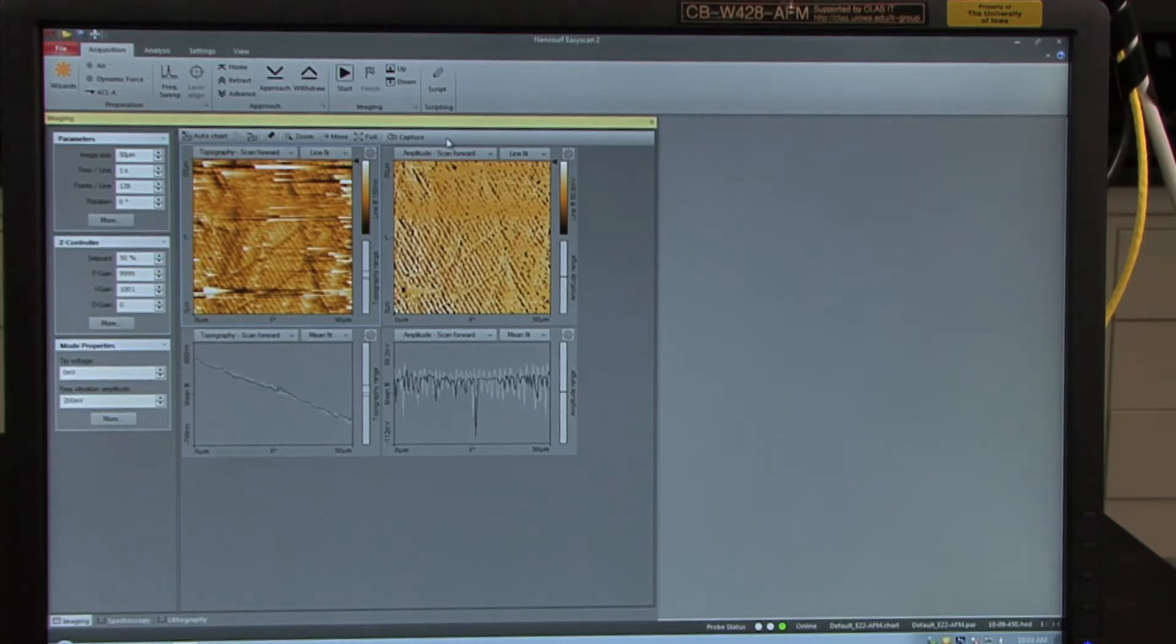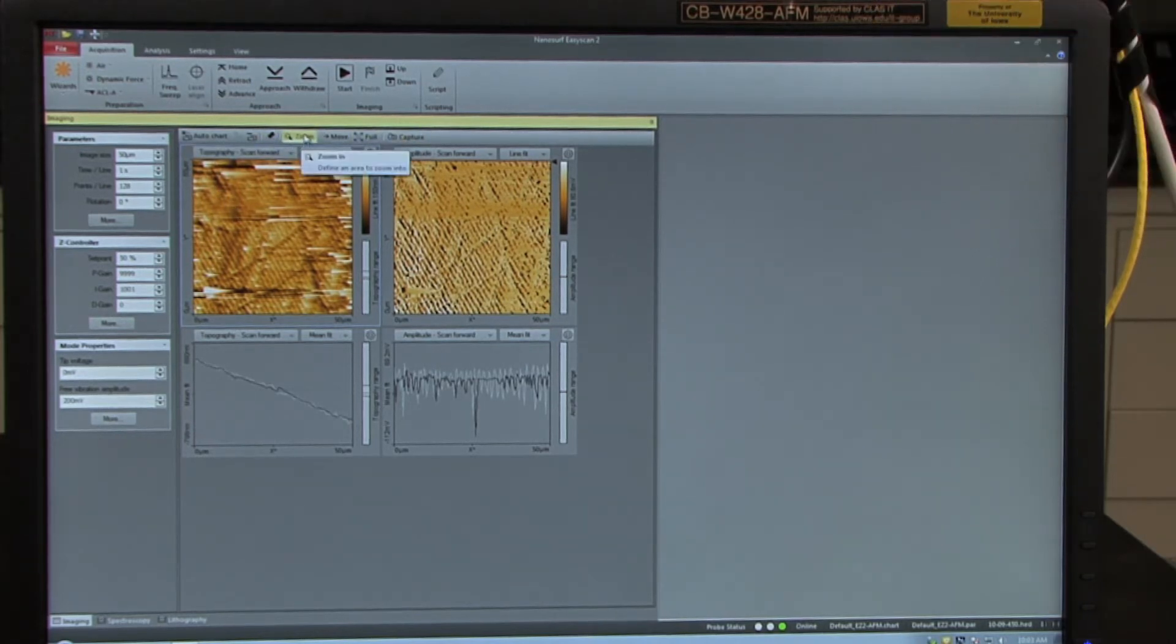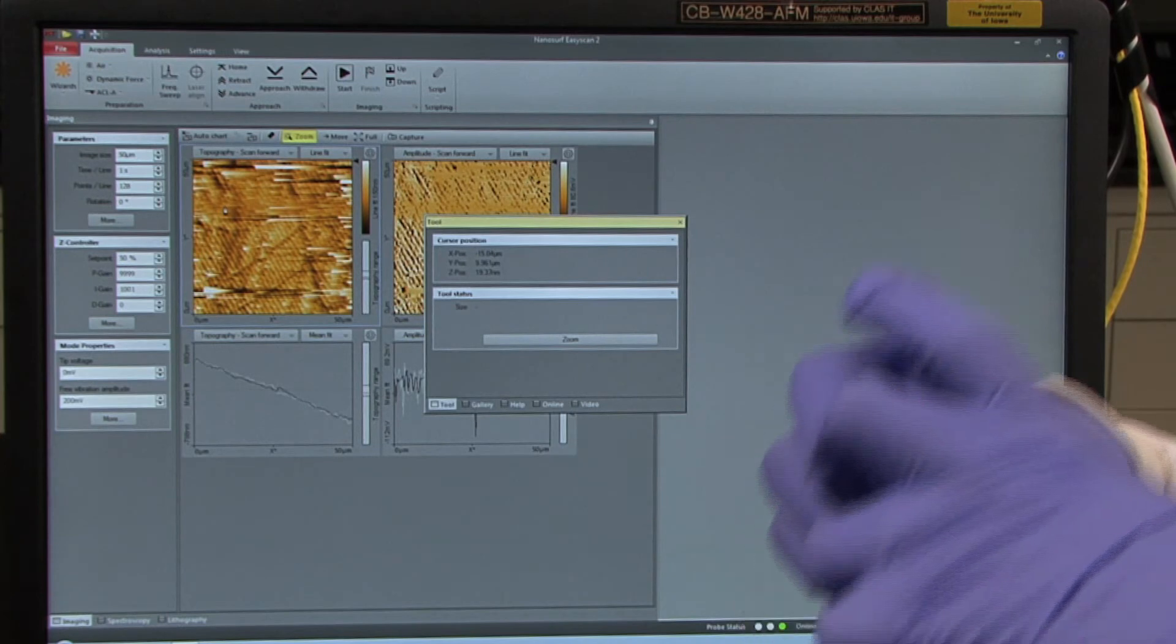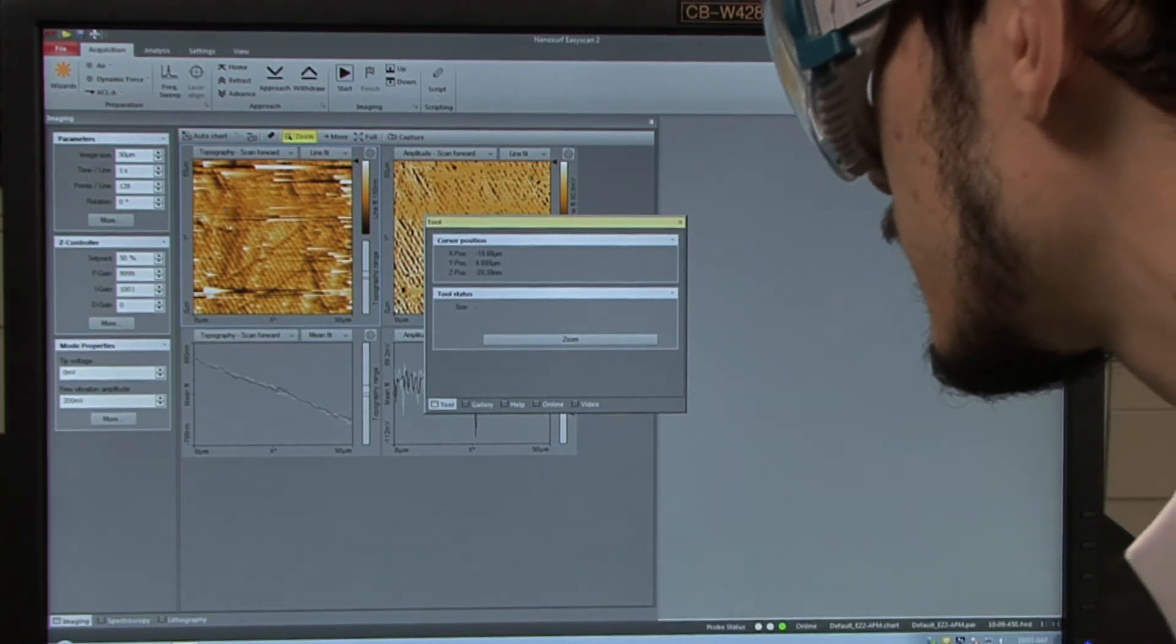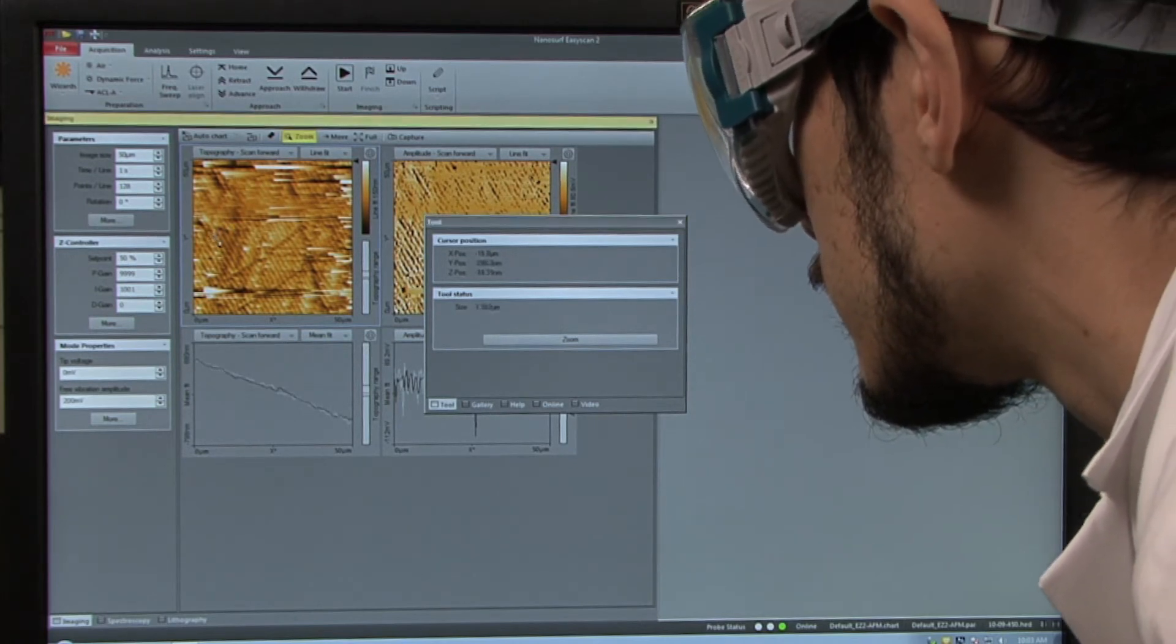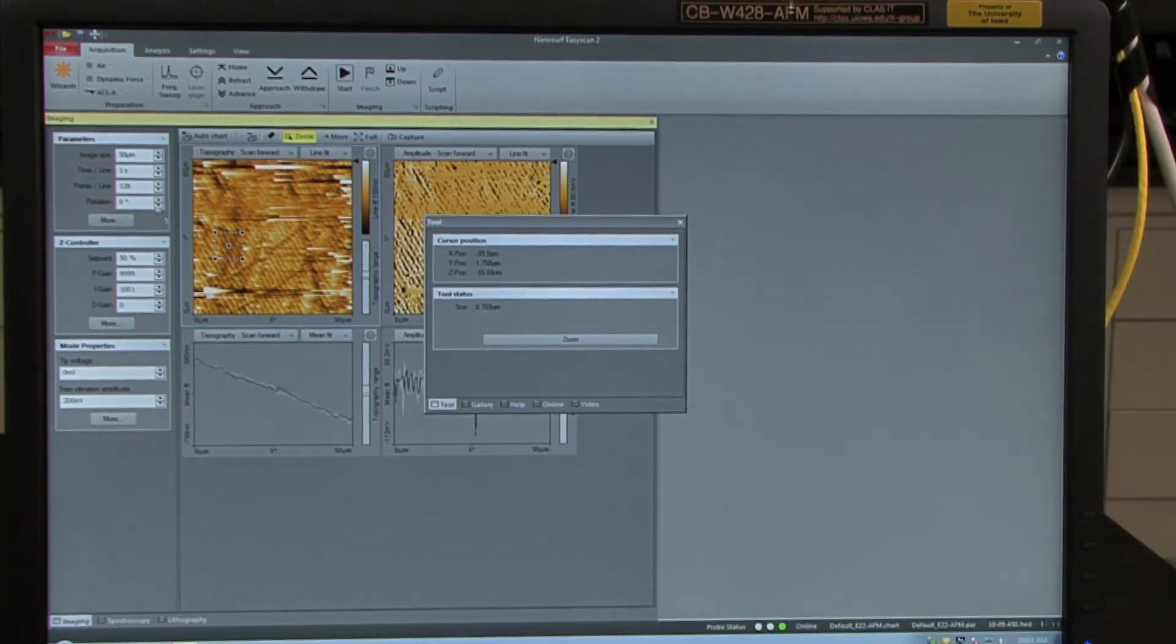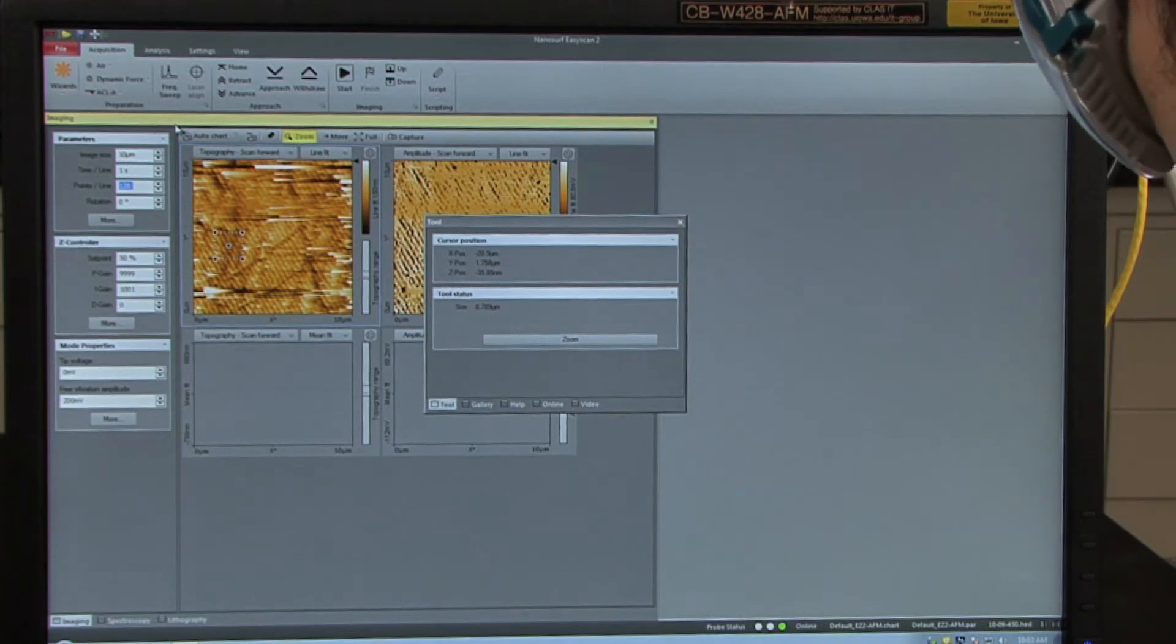Once you have an acceptable image, you'll want to zoom in on the area of interest. In order to do this, you want to click on the zoom feature on the auto chart, and carefully draw a box in which the feature you're interested in is directly centered in that box. Once you release, go over to parameters, change the image size to 10 micrometers, and the number of points per line to 256 to double the resolution.